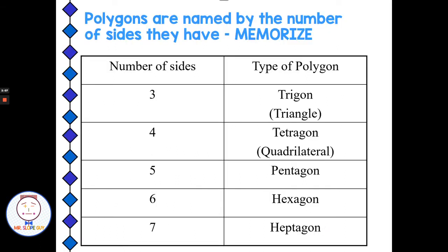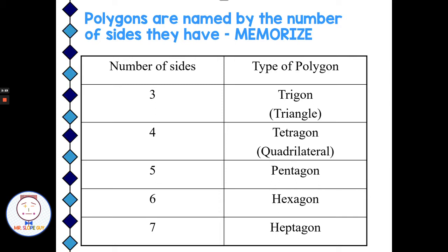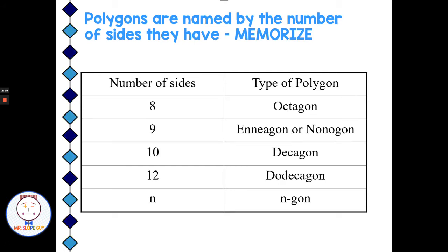Here is a list of polygons by their names — you'll need to know these, memorized, to help your life in algebra and geometry. A three-sided polygon is also known as a trigon or triangle. A four-sided polygon is a tetragon or quadrilateral, quad meaning four. A five-sided polygon is a pentagon. Six sides is a hexagon. Seven sides, heptagon. Eight sides, octagon. Nine sides goes by anagon or nonagon. Ten is a decagon. Eleven is not required to memorize, but twelve is a dodecagon.